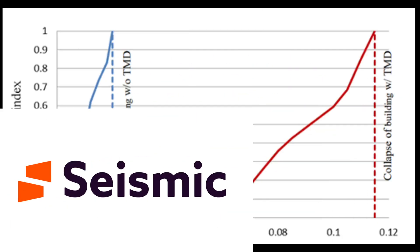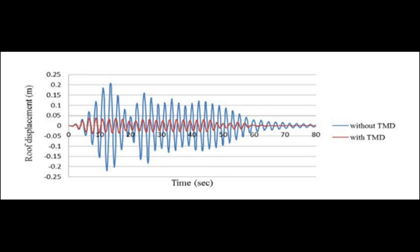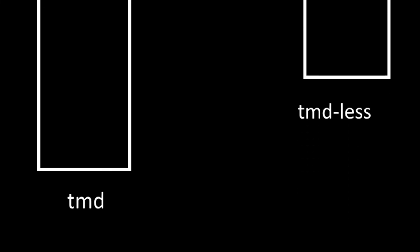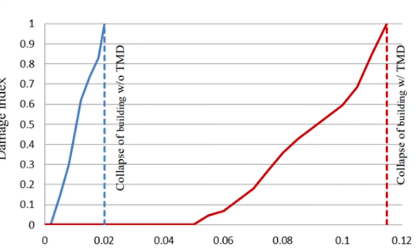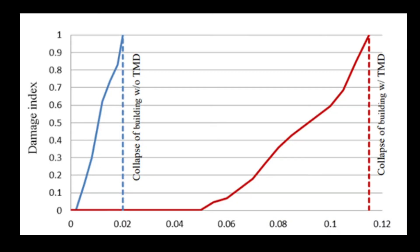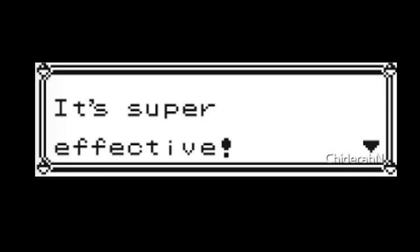TMDs are another passive technology that can significantly reduce the effects of seismic activity. The graph shown demonstrates how much the TMDs can reduce overall movements of a building during seismic events. The highest that the TMD building goes is roughly 0.04m, compared to 0.2m in a building without. This graph shows how much more force is required to topple the building in a smaller scale model. The unit on the bottom is the peak ground acceleration, measured in intensity, where 0.001g is equal to 0.01m per second squared. The model building could survive up to 1.2m per second squared, which is roughly six times more than that without the damper. It can be concluded that TMDs are a highly effective technology for minimizing damage to buildings.